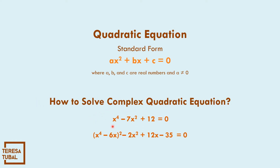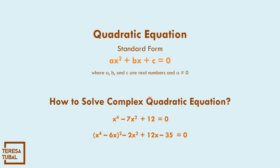For example: x⁴ - 7x² + 12 = 0, and the second one: x⁴ - 6x² - 2x² + 12x - 35 = 0. Let us try to solve these equations.